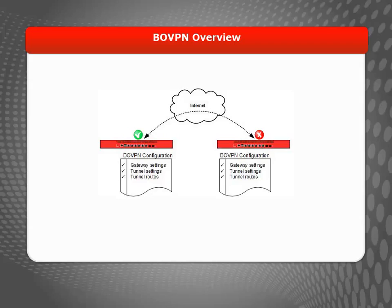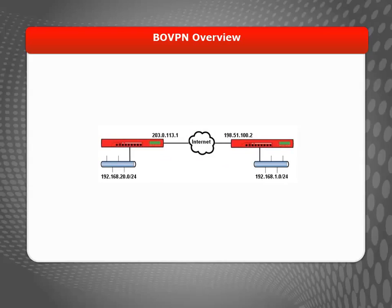If there's a mismatch, there's a problem, and your VPN connection will fail. In this video, I'll show you how to troubleshoot a VPN that has a Firebox at each end.